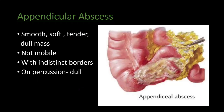Appendicular abscess is a complication of appendicitis. The mass is smooth, soft, tender, and dull. It is not mobile and has indistinct borders. On percussion it is dull. To differentiate: in appendicular mass we have distinct borders, whereas in appendicular abscess we have indistinct borders.